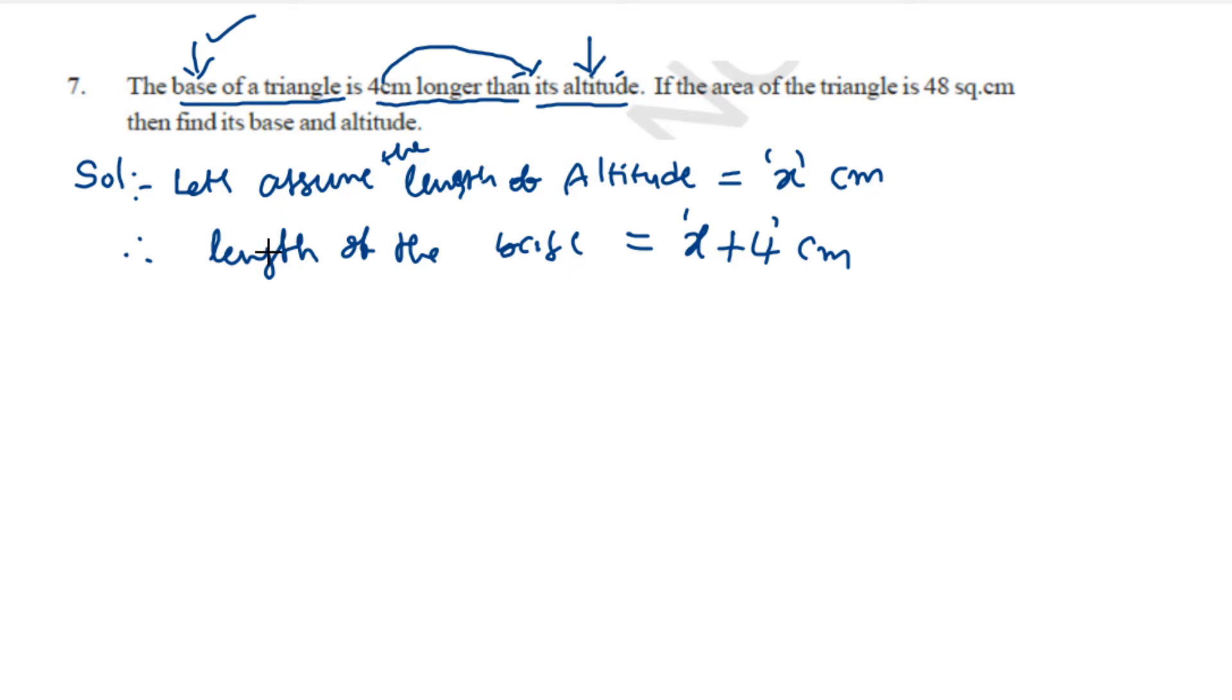Now, according to our assumptions, we have altitude as x cm and length of the base as x plus 4 cm. Now, what other information we have in the problem? The area of the triangle. So what is the area of the triangle? Area of the triangle is 48 cm square.